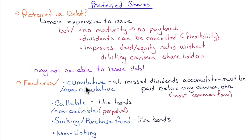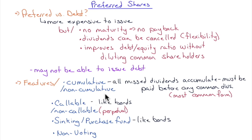Preferred share features include cumulative vs. non-cumulative. Cumulative means all missed dividends accumulate and must be paid before any common dividends — this is the most common form. Non-cumulative preferred shares would require a higher fixed dividend to compensate investors for the risk of losing missed payments. It's cheaper for a company to issue cumulative preferred shares.